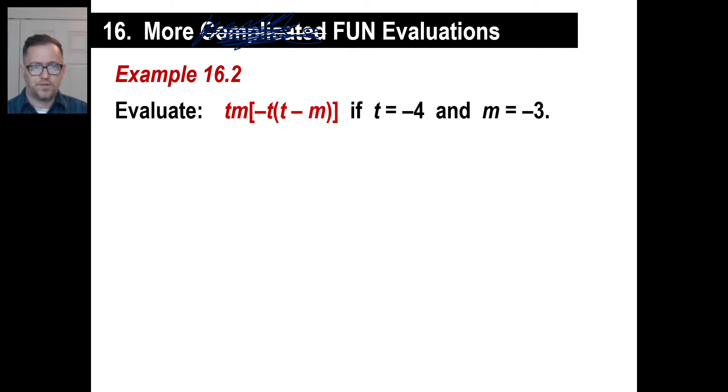All righty. Since you have paused and copied, or at least paused. Tm means t times m. This is, you can do this. Go ahead and do this in one step here. T times m means negative 4 times negative 3. Well, we know what negative 4 times negative 3 is. The answer to that is 12. Bracket. And let's do another one.